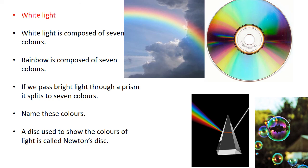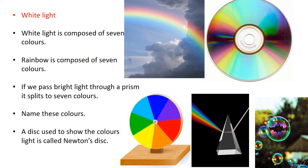In bubbles that we make and play with, you can also observe all these colors. In the lab, we use a disk called Newton's disk. This disk has all the seven colors, and if you rotate this disk, what you see is the white color. This shows that white color is composed of its component colors — that is VIBGYOR.